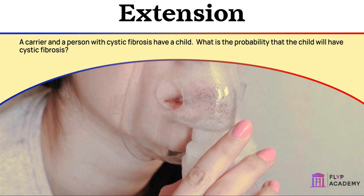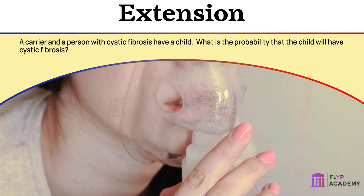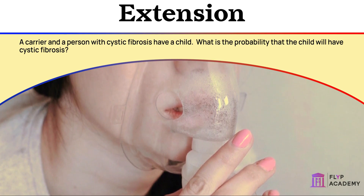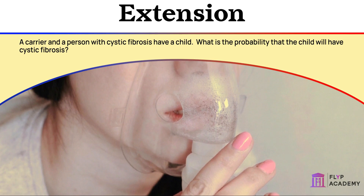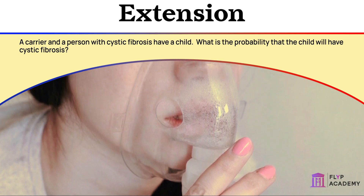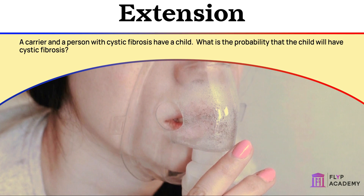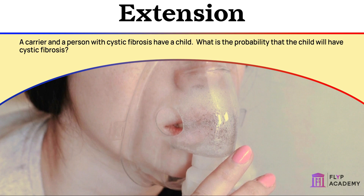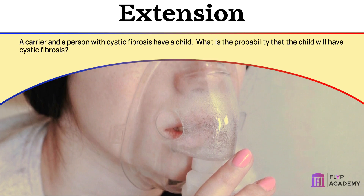Because of this, parents may choose to undergo embryo screening when they become pregnant. This procedure is done during early pregnancy and poses a small risk to the unborn baby. However, it can tell parents if the baby will be born with a specific genetic condition, allowing them to prepare for any additional needs the child may have, or they can choose to ask for a termination of the pregnancy.